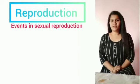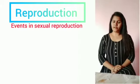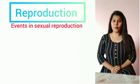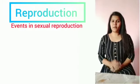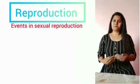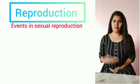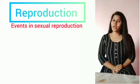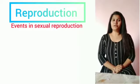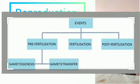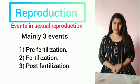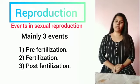Today we will study the events in sexual reproduction. After attainment of sexual maturity, all organisms capable of reproducing exhibit some complicated and elaborate events. Sexual reproduction is characterized by the fusion of male and female gametes, fertilization, zygote, and embryogenesis. These events are categorized into three groups: pre-fertilization, fertilization, and post-fertilization.